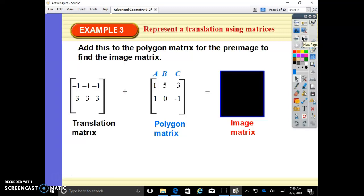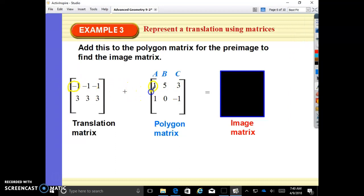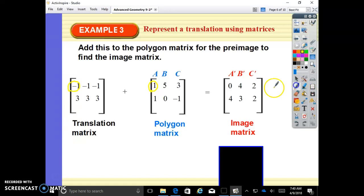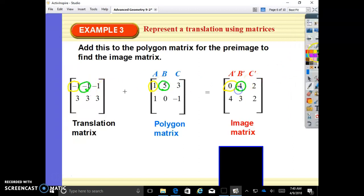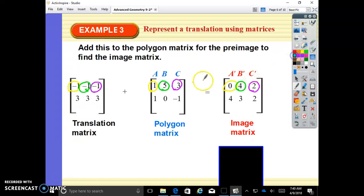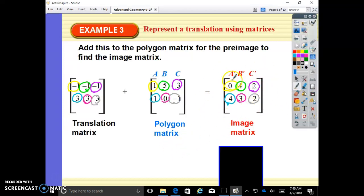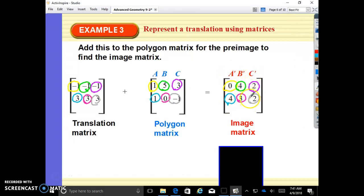Add this polygon matrix for the pre-image to find the image matrix. So negative one plus one is zero. Negative one plus five is four. Negative one plus three is two. Three plus one is four. Three plus zero is three. Three plus negative one is two. And there is our image matrix. Point A, or A prime, is at zero, four. B prime is at four, three. And C prime is at two, two.